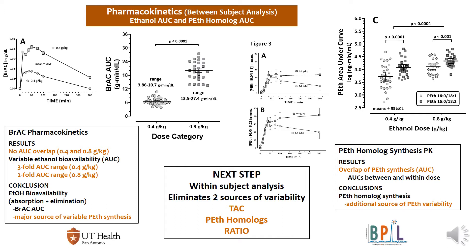Assuming that ethanol bioavailability and PLD concentration in RBCs of individual subjects doesn't change over time, the most accurate use of PEth as a function of alcohol consumption appears to be tracking intake over time with multiple measurements within subject. Calculation of the ratio of 18:1 to 18:2 is a reasonable approach to monitor ethanol consumption over time.